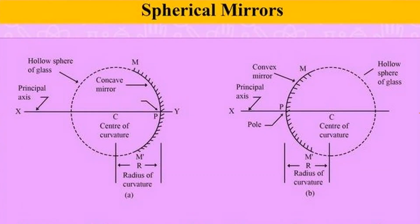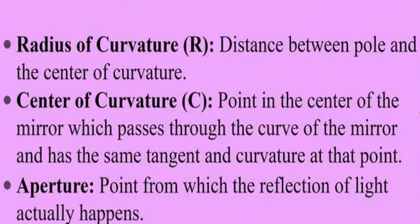The sphere has one center, and that center is the center of curvature. The radius of the sphere is the radius of curvature. The midpoint of the reflecting surface is called the pole. The pole is connected to the center of curvature, and the long straight line through them is called the principal axis. The radius of curvature is the distance between the pole and the center of curvature.